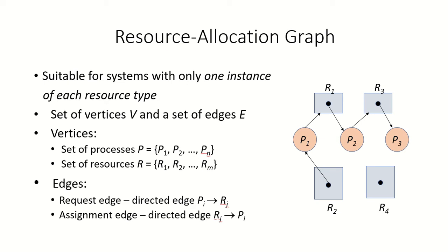In this video we are going to see how resource allocation graphs can be used for deadlock avoidance. As discussed in the earlier video, resource allocation graphs are suitable for systems with only one instance of each resource type. Here we have resources R1, R2, R3, and R4, each with only one instance. So RAG can be used in such a system to avoid deadlocks.